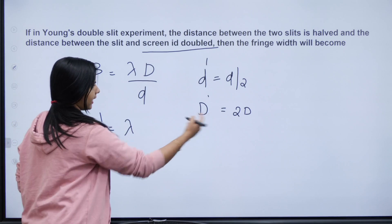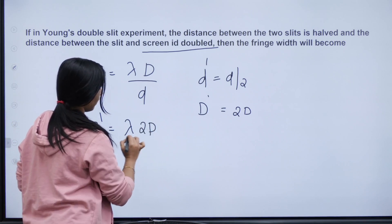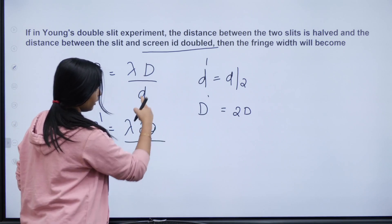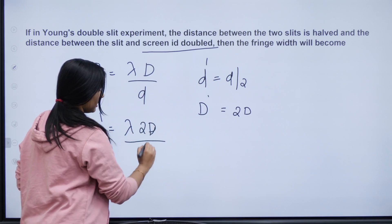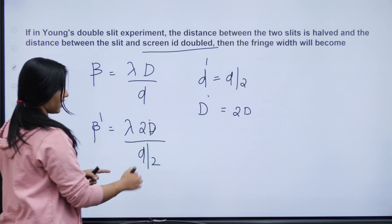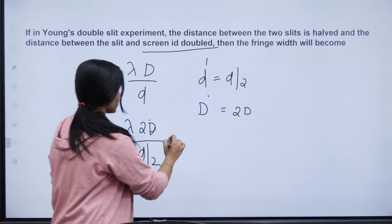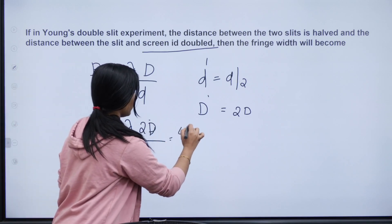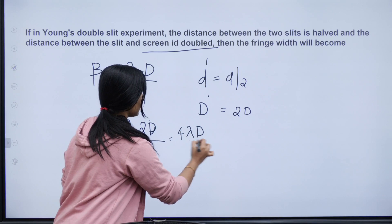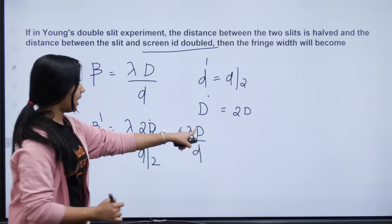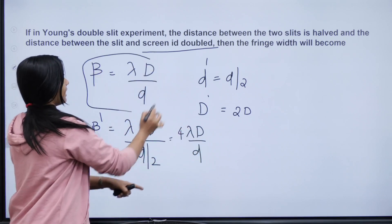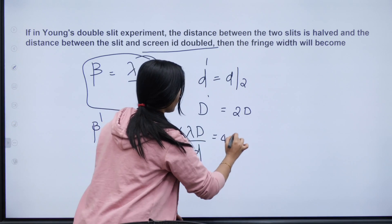That becomes lambda times 2D divided by d by 2, which simplifies to 4 lambda D divided by d. Lambda D divided by d is beta, so we get 4 beta. So total beta dash is 4 times the previous one.